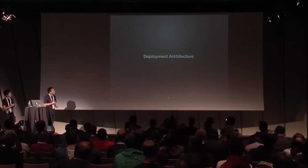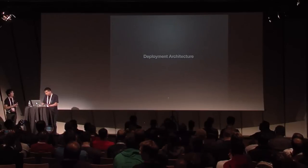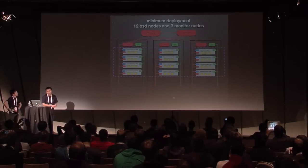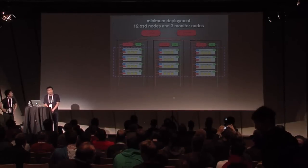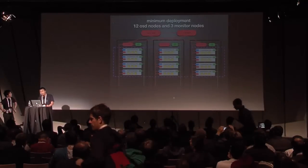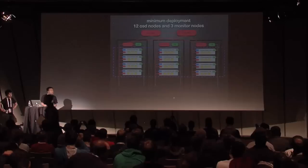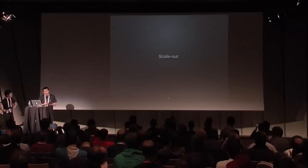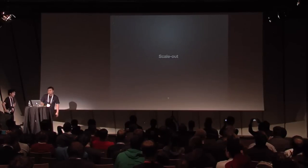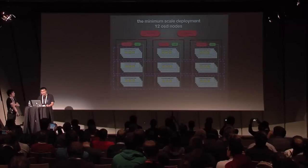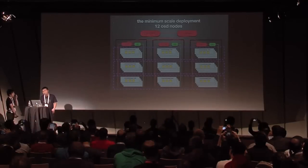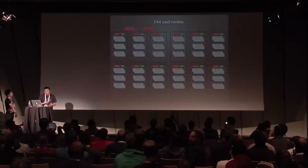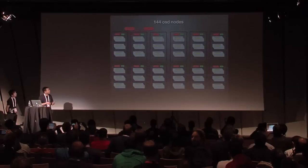Next, I will show our minion deployment architecture. The deployment has 12 OSD nodes and three monitor nodes. The nodes have two 10GB networks — one is used for the storage network and the other for the VM network. Our deployment architecture is very easy to scale out. You can add 12 OSD nodes to expand the Ceph capacity, and you can also schedule maintenance on the nodes.